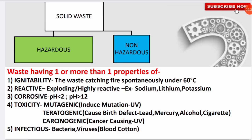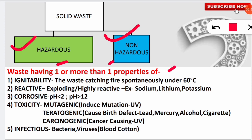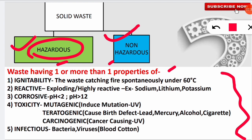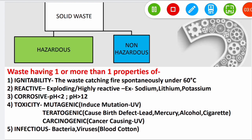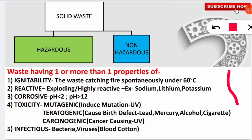One more important category for solid waste is hazardous and non-hazardous solid waste. For hazardous solid waste, the definition is: waste having one or more of the following five properties will be regarded as hazardous solid waste. If the waste does not have at least one of these properties, it will be called non-hazardous solid waste.